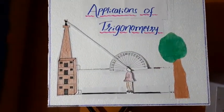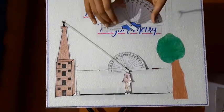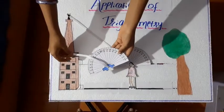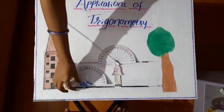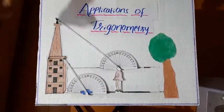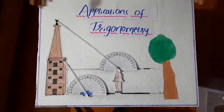Similarly like this, we have to stick another protractor and insert this iron nail at the corner of the building. Like this, our model will be prepared.